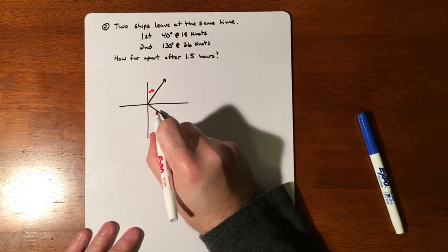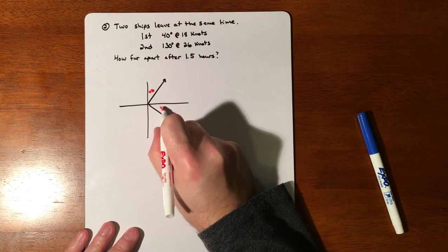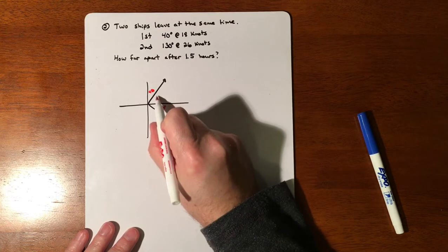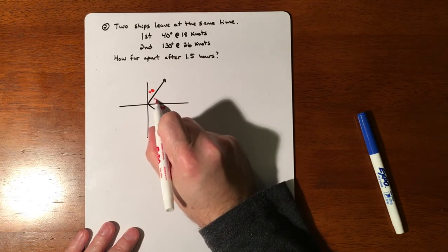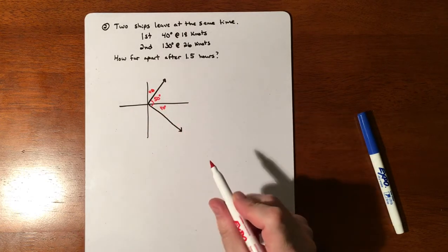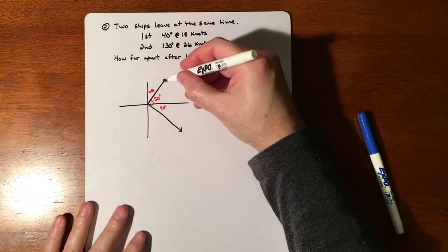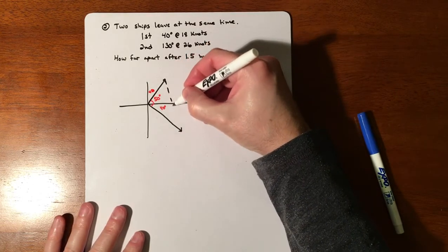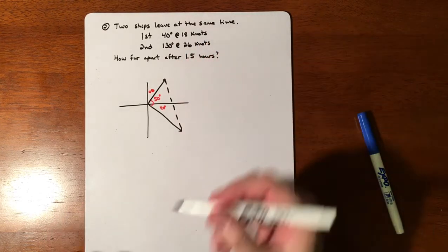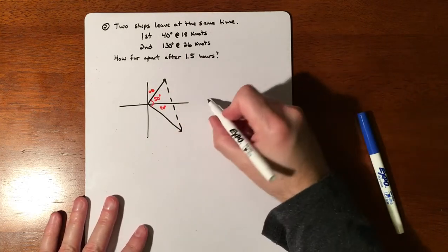We're heading in that direction and in that direction. This is 40 degrees, and if this is 40 degrees that puts this at 50 degrees, which is wonderful because it makes that a right angle. We're looking for how far apart they are after 1.5 hours - that distance right there. That made us a right triangle.